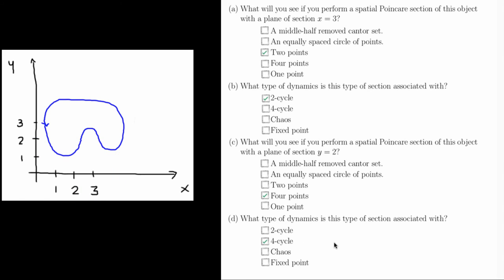This should illustrate to you the difficulty of assigning a value to the period of an orbit of a flow. Depending on where you take the plane of section, your conclusions can be different. Like in this case, one plane of section said it was a two cycle, and another plane of section described this as a four cycle.